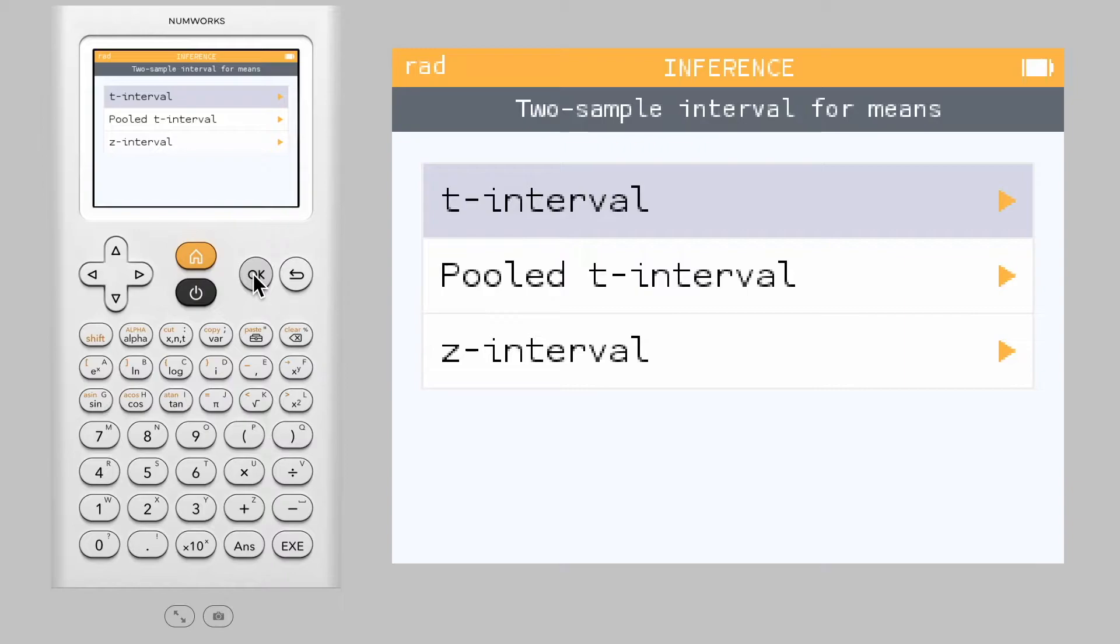For confidence intervals for means, you will need to indicate the type of interval. In most cases, we recommend a t-interval.